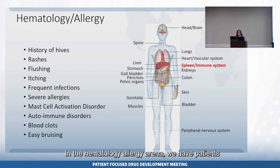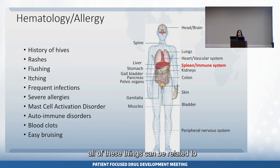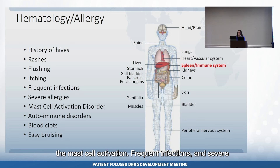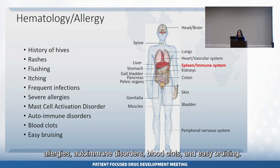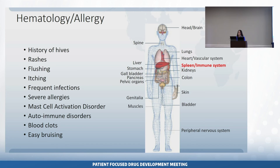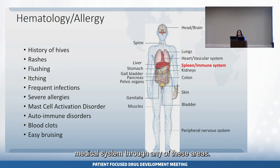In the hematology and allergy arena, we have patients with a history of hives, rashes, flushing, and itching — all of which can be related to mast cell activation. There are also frequent infections and severe allergies, autoimmune disorders, blood clots, and easy bruising. Patients may find their way into the medical system through any of these areas.